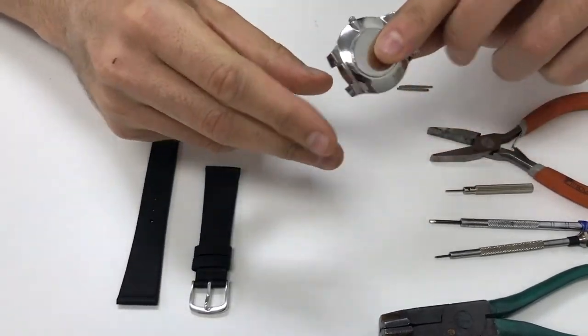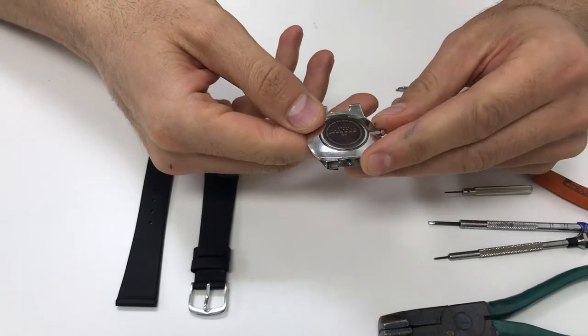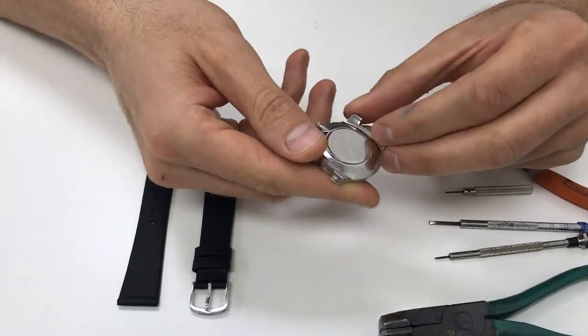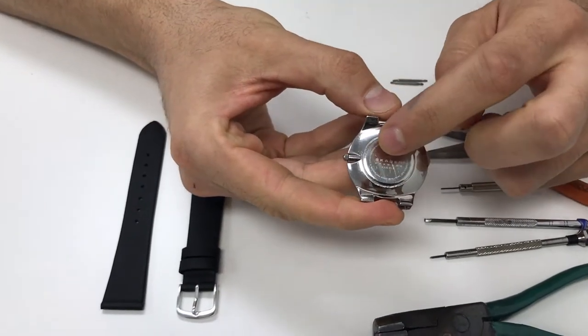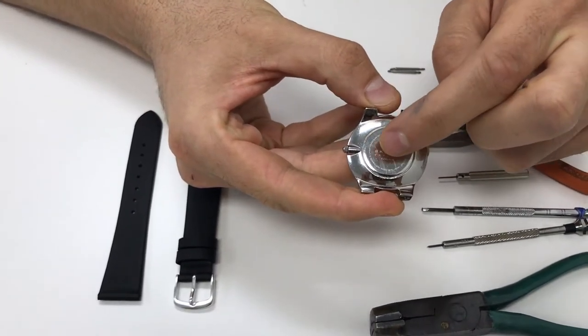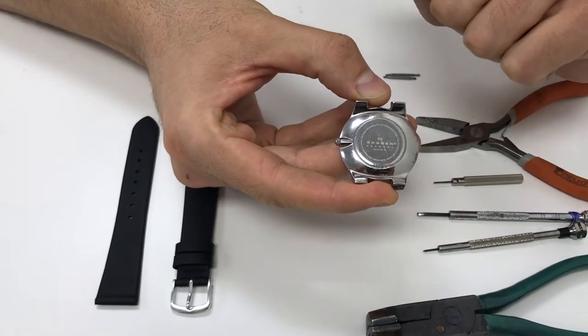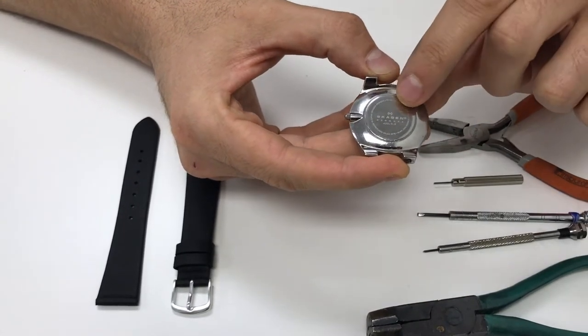Now this model is a 433 LSLB. On the back of the watch, the Skagen, you can see here right underneath the brand Skagen you'll see 433 LSLB and that's how you can identify the type of model that your Skagen is.